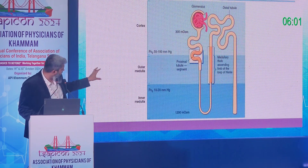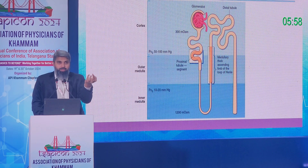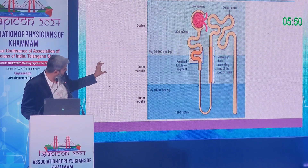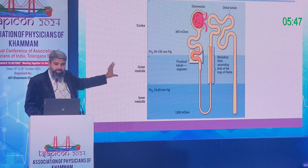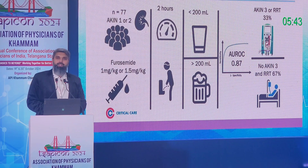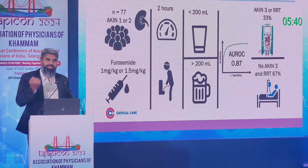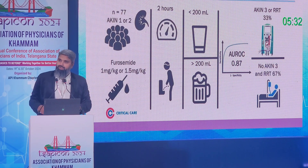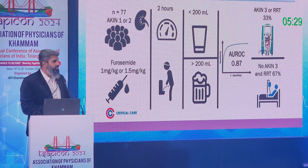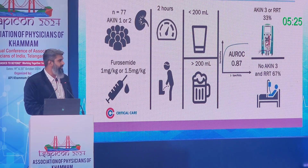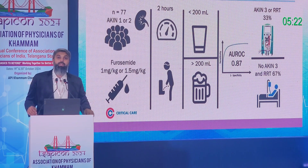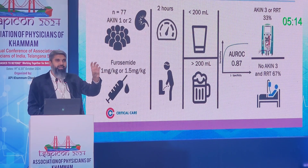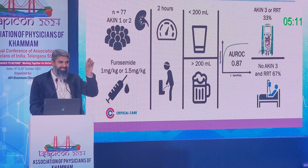ATN due to acute hypotension or infection is the most common cause of AKI — it occurs in the thick ascending limb of the loop of Henle where maximum ATP is utilized. Whether these tubules are still working can be assessed using the furosemide stress test: give 1 mg/kg of furosemide IV, wait 2 hours, and check urine output. If output is more than 200 ml, the patient likely won't need dialysis — the tubules are still intact, it is acute tubular ischemia, not necrosis.